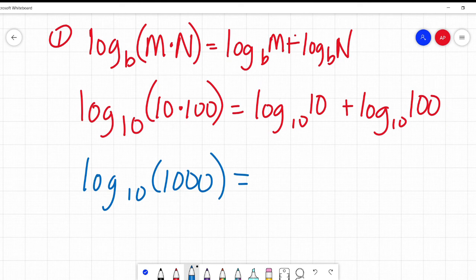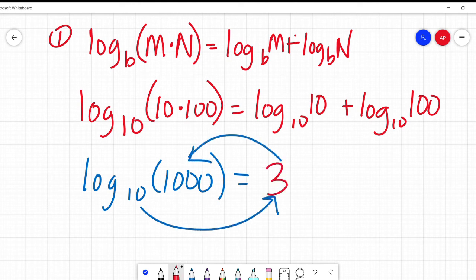First we have inside here 10 times 100. Well, I'm going to rewrite that and say log base 10 of 1,000. I'm going to look just at this by itself and kind of ignore this right-hand side for a little bit. Log base 10 of 1,000. 10 to what power is 1,000? 3.